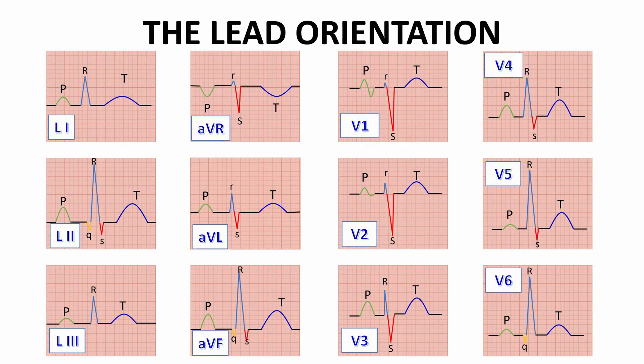We have seen that the 12-lead ECG consists of the following 12 leads recorded in succession: Lead 1, Lead 2, Lead 3, AVR, AVL, AVF, and the chest leads V1, V2, V3, V4, V5, and V6.